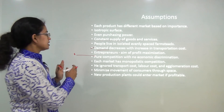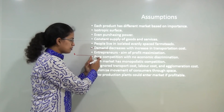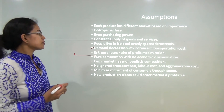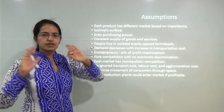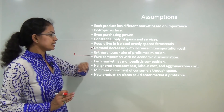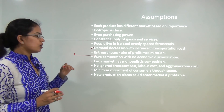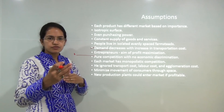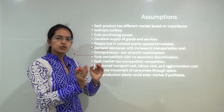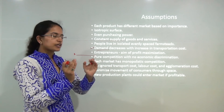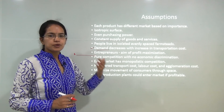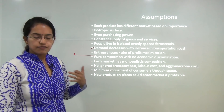As transport cost increases, the amount charged rises and consequently demand for the product decreases. People living in isolated spaces are evenly scattered. Lösch also focused on monopolistic competition and tried to minimize the movement of customers through space — people are willing to go to the closest location to get the best cost. Finally, he said new production plants could enter the market whenever possible.